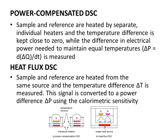The second type is heat flux DSC. In this type, the sample and reference pans are heated from the same single source. The temperature difference, Delta T, is measured and then this signal is converted to a power difference, Delta P, using the calorimetric sensitivity. This conversion can be done manually or automatically by the system.